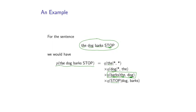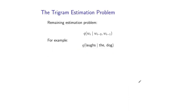To summarize: for any sentence, its probability is a product of terms — one Q parameter for each trigram in the sentence, conditioning each word on the previous two words. This leaves us with a remaining estimation problem: we want to estimate these Q parameters. For example, we might want to estimate the probability of 'laughs' given that the previous two words were 'the' and 'dog'. This turns out to be quite a challenging problem.